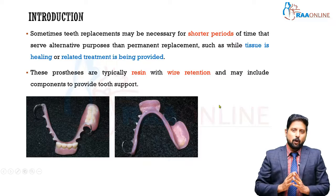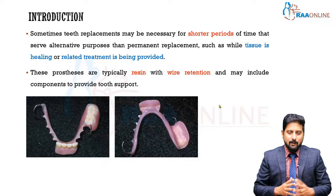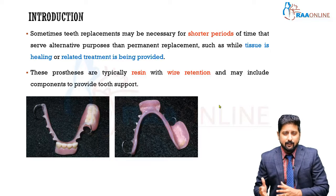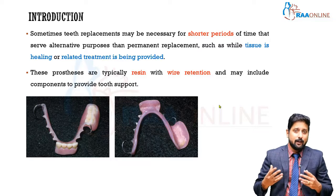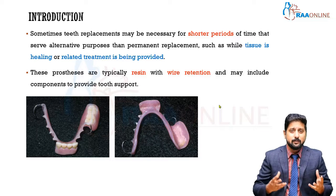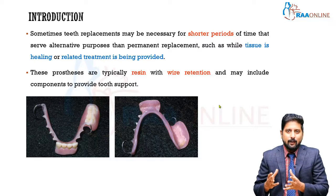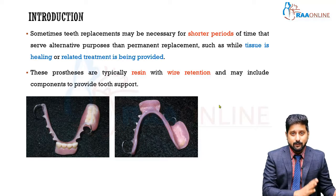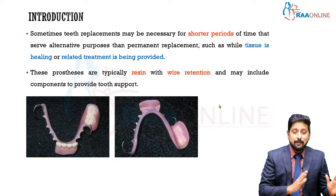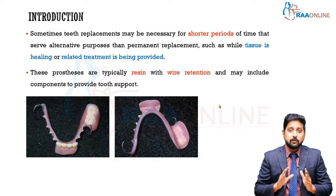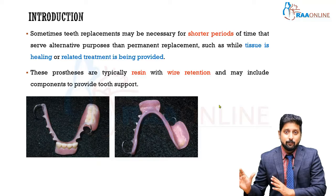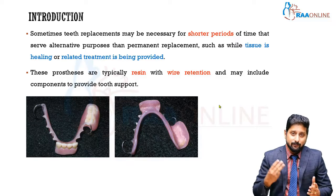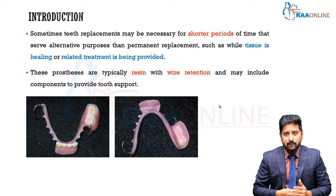We all know what a removable partial denture is — it has components like major connector, minor connector, direct retainer, indirect retainers, rests, denture base, and denture teeth. There are many principles governing its use, making it a definitive prosthesis. However, that is not the only type; we also have temporary removable partial dentures, which include interim, transitional, and immediate types.